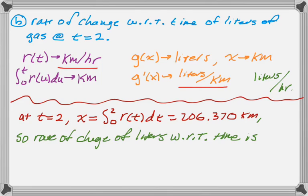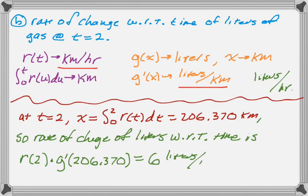So the rate of change of liters with respect to time is, so R of T at two is just R of two. And then we want to do G prime of X, but X is the value that we found. So times G prime of 206.370, and then punch that into your calculator. It gives you pretty much exactly six liters per hour, which I don't know, I find that kind of surprising. But yeah, pretty much exactly six liters per hour. And we did that just by looking at all the units of everything. And it's not easy, but it's not all that difficult.